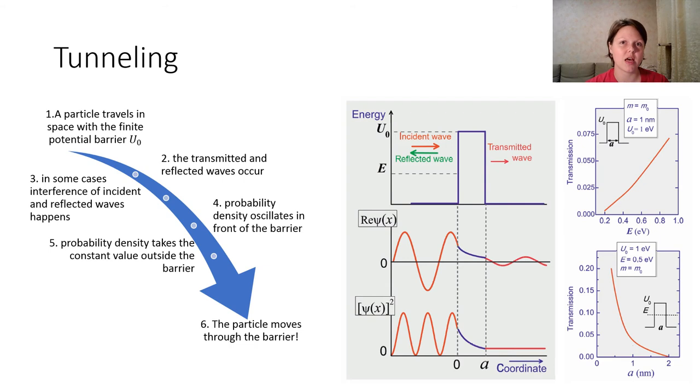So, we have some kind of incident wave that is falling down on the potential barrier. Also, if we have the incident wave, we also should have reflected wave. And if some possibility of a particle going through the barrier exists, then we will have transmitted wave.